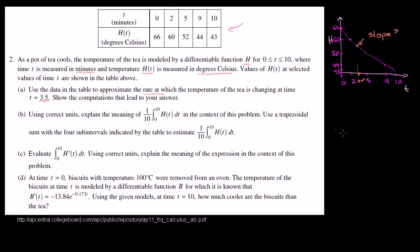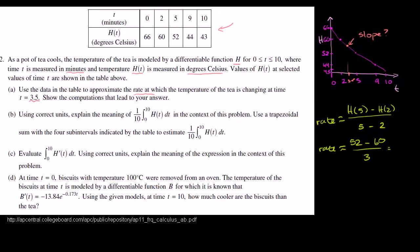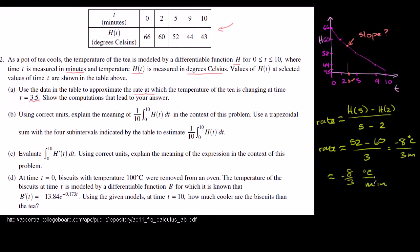So the rate is going to be approximately the change in temperature over those minutes: h(5) minus h(2), divided by 5 minus 2. At 5 minutes, our temperature is 52 degrees. At 2 minutes, our temperature is 60 degrees. That's over a change of 3 minutes. This gives us negative 8 degrees Celsius over 3 minutes, so the rate at t equals 3.5 is approximately negative 8/3 degrees Celsius per minute. That is Part A.